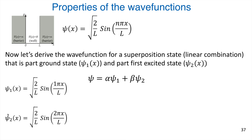Now let's talk about superposition states — linear combinations of the allowed solutions. These are all individually solutions to the Schrödinger equation; you can put any integer value for n and that's a legal solution. But it turns out you can also take multiple wave functions and combine them as a linear combination, giving psi equals alpha times psi-one plus beta times psi-two. What are alpha and beta, and is there any constraint on them?